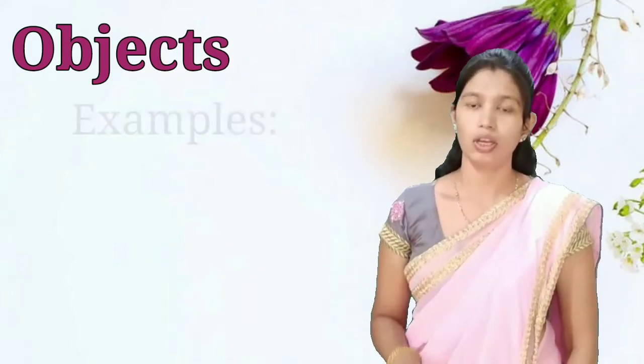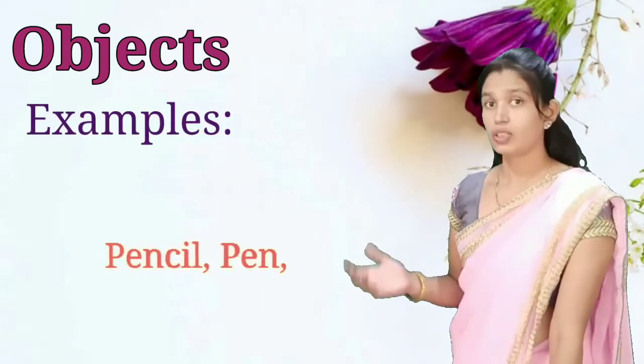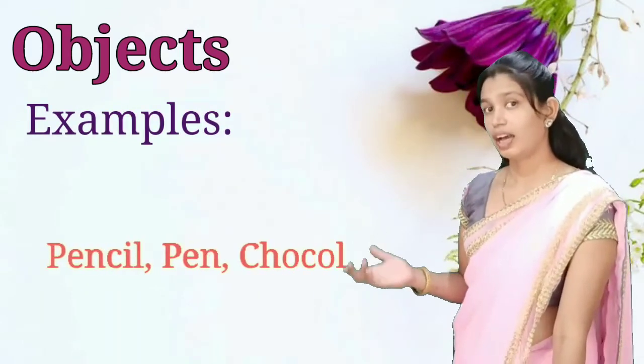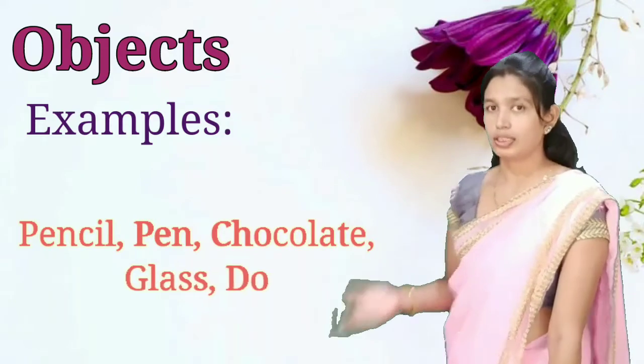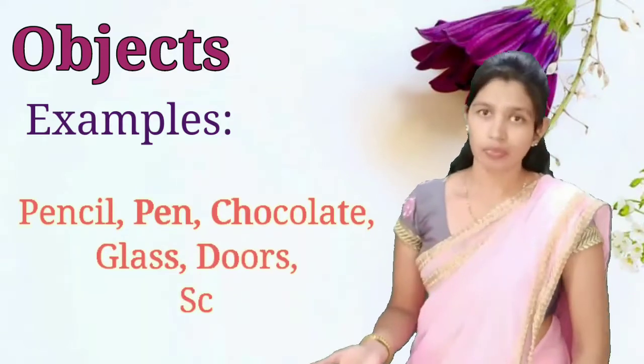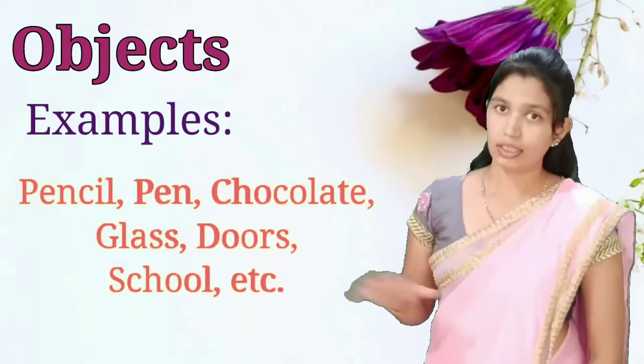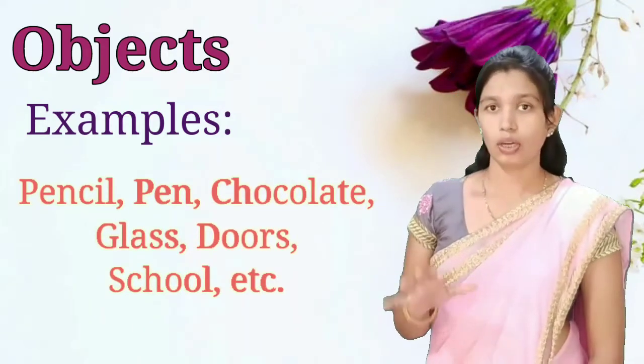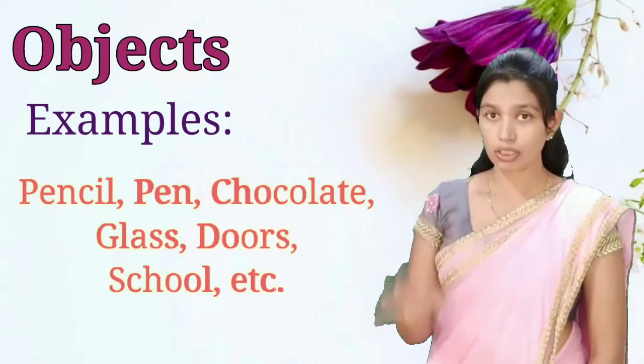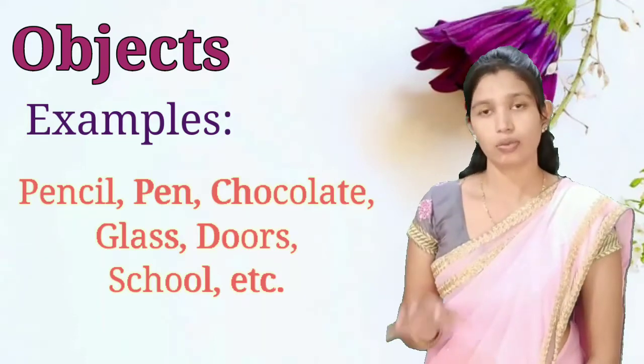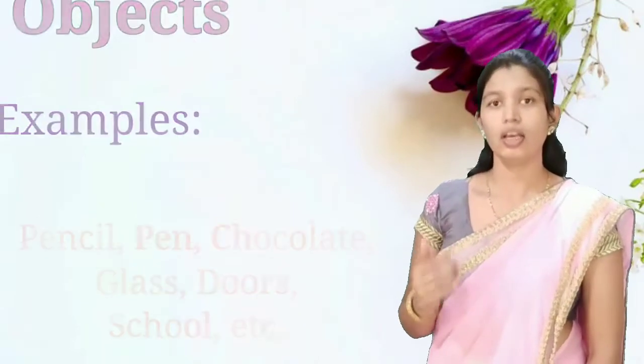Toh objects. Objects matlab kya? We are surrounded with so many things which we have given some particular name, and that is noun. For example: pencil, paint, chocolate, glass, door, school, etc. Toh yeh sari chizo ko identify karne ke liye jo words diye hue hote hain, unko noun kehte hain.